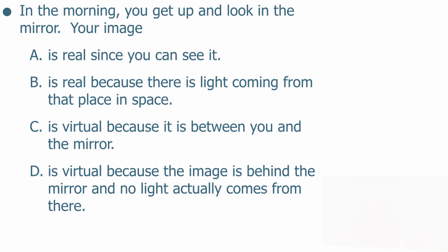So in the morning you get up and you look in the mirror. Now, your image is A, real because you can see it; B, it's real because there is light coming from that place in space; or C, it's virtual because the image is between you and the mirror; or D, it's virtual because the image is behind the mirror and no light actually comes from there.